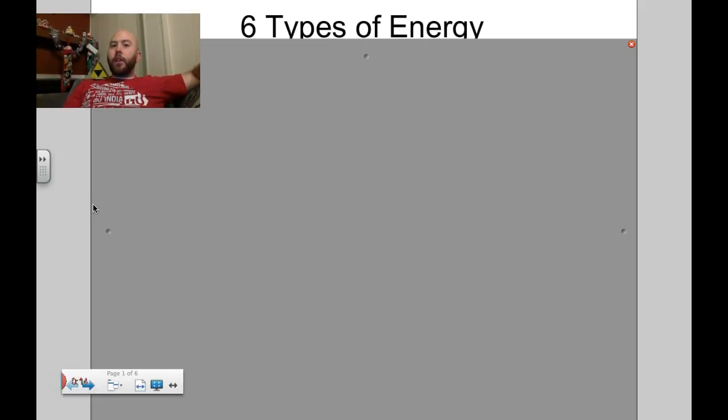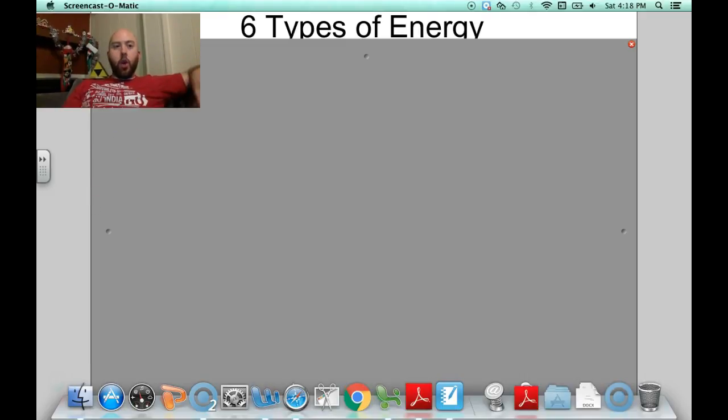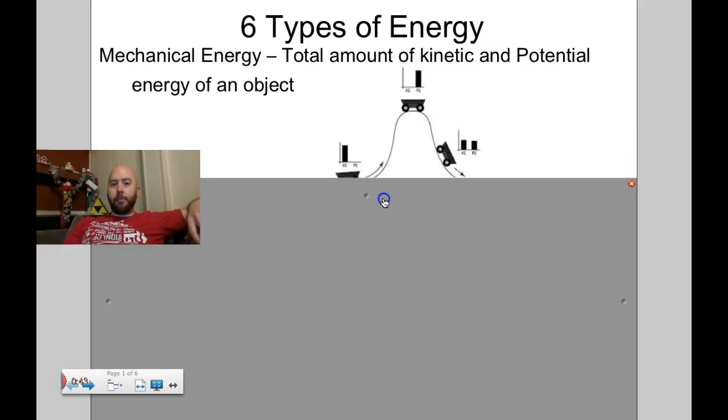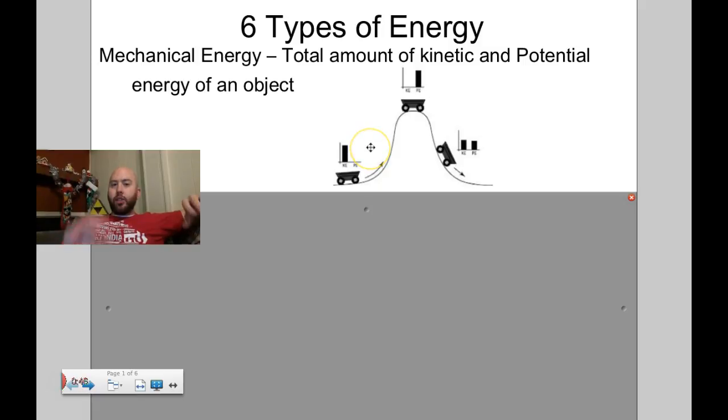I mentioned in the previous video that there's kinetic and potential energy, but if you put kinetic and potential energy together, it makes a certain kind of energy which we call mechanical energy. Mechanical energy is the total amount of kinetic and potential energy of an object. It's the sum of your potential and kinetic energy at the same time, looking at a particular time what those two energies put together equal.